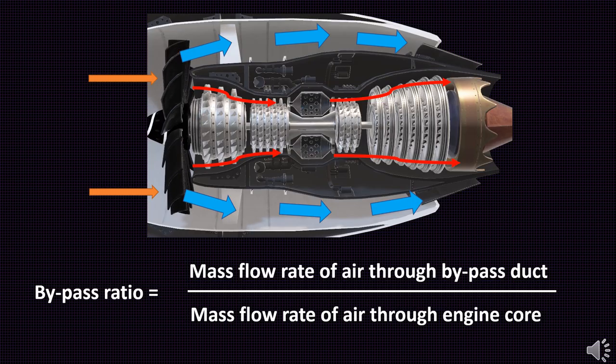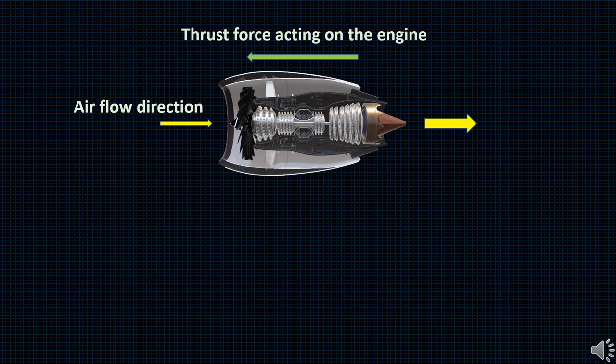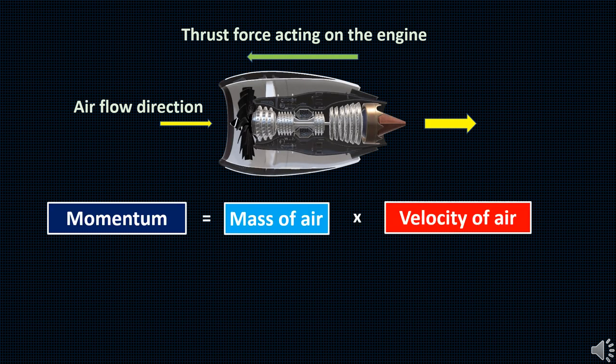We understood from our previous video that the thrust is produced by increasing the momentum of the air. This momentum increase can be attained by keeping the mass flow rate of air small and increasing the velocity of air to higher value.